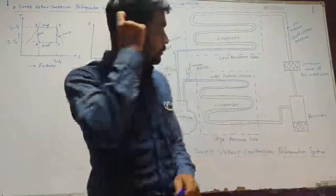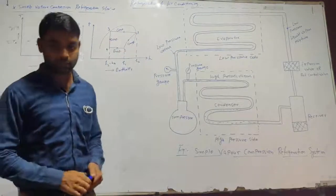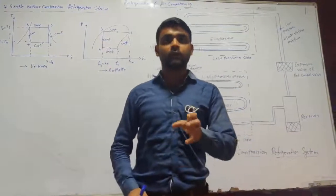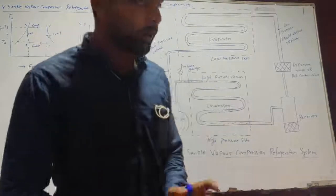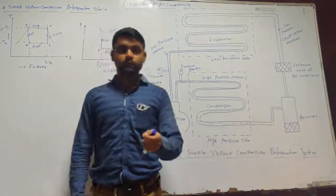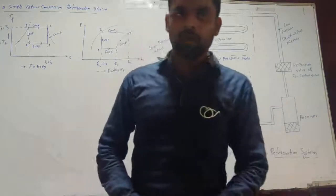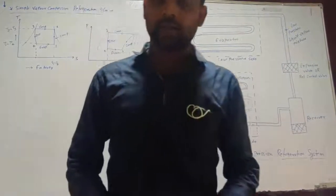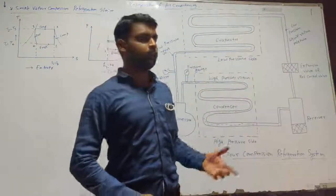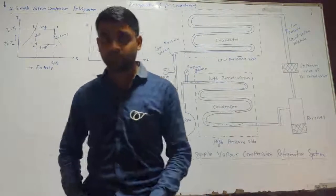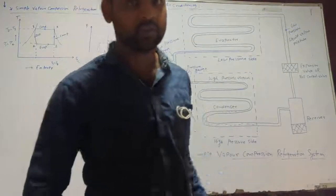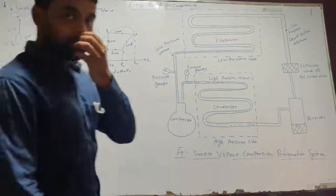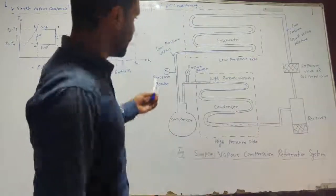Firstly, we have to introduce the vapor compression refrigeration system. A vapor compression refrigeration system is an improved type of air refrigeration system. In the vapor compression refrigeration system, we use refrigerant as a working medium. The refrigerant may be R11, R12, but recently we use R134a, hydrocarbons, which are also used as refrigerants.